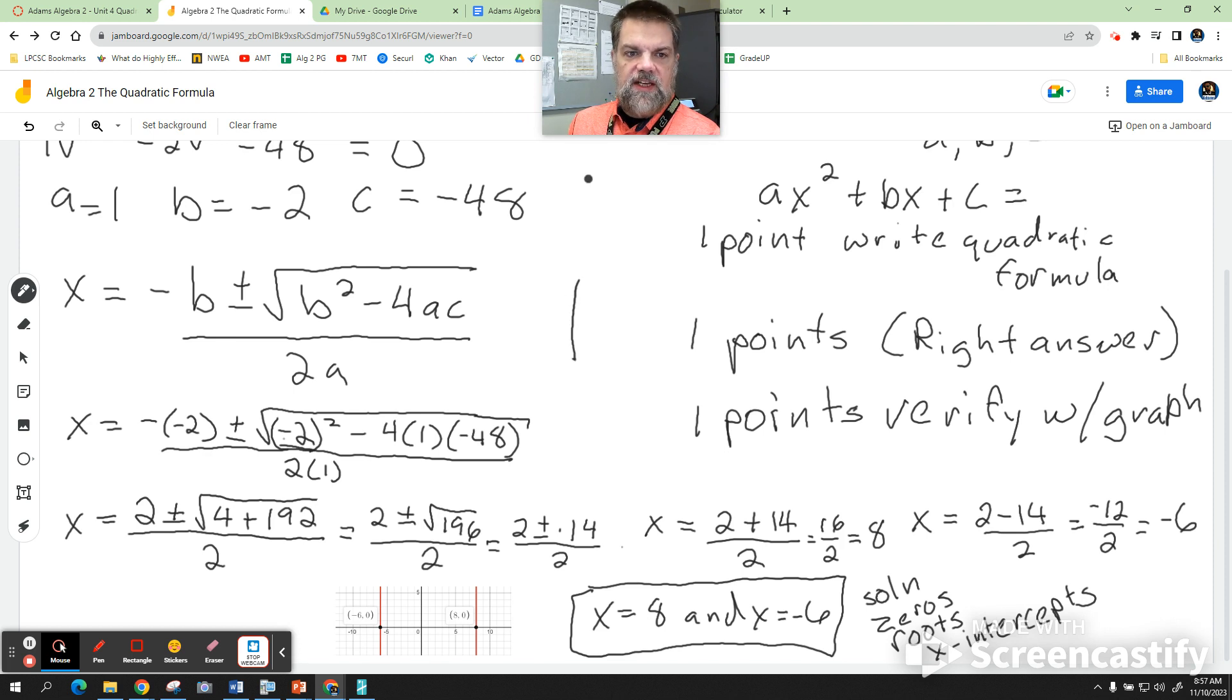We know that it's going to open up because we have a positive a term. If a is positive, then it opens up, so you could just kind of sketch a graph like this. But I really want you to verify it in Desmos, though. I want you to plug it into Desmos. So this would be 8 comma 0. This is how you could sketch it in on the paper, and this would be negative.